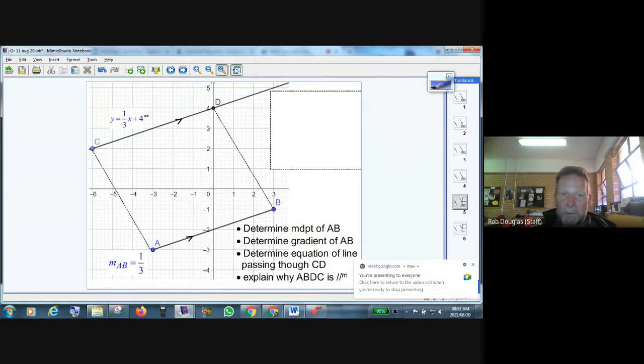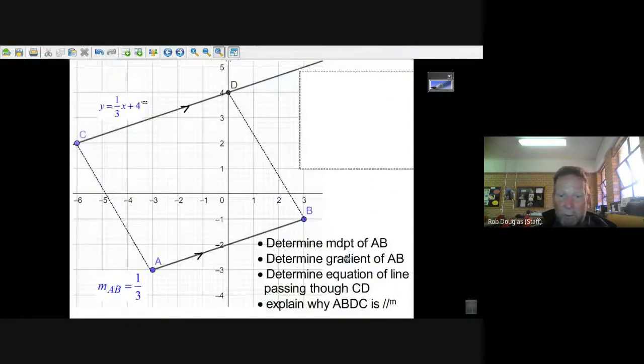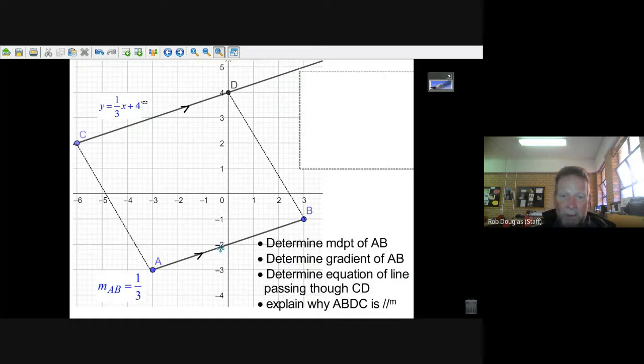We've done the first parts of this question where we figured out the midpoint of A and B. We figured out the gradient of A and B. We knew that because they're parallel, the gradients would be exactly the same. So we have the gradient of CD and then we use this point minus six and two to find the equation of the line.